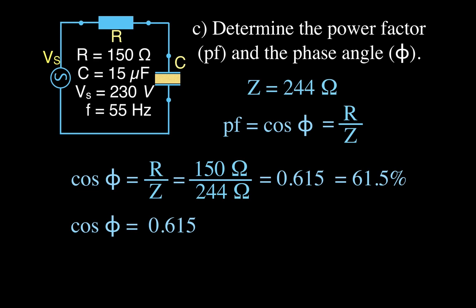To calculate the phase angle phi, we use the same equation. The cosine of phi equals 0.615, so the phase angle is 52 degrees. You can verify this using the sine or the tangent and you'll get the same answer in all three cases.